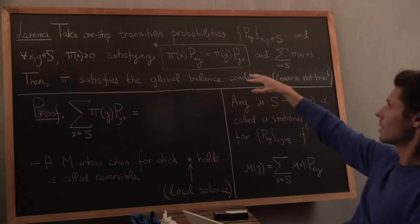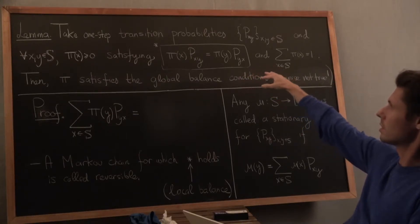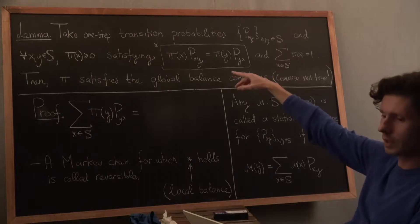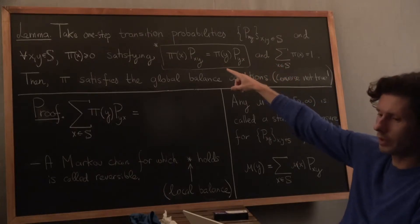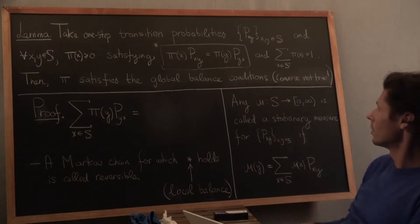So pi is a distribution, and it satisfies, in addition, this thing in the box, condition star. I put a star right on the side there. So these are, if you remember from a few clips back, these are called local balance conditions.